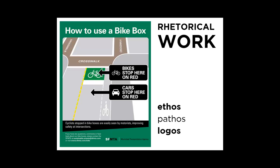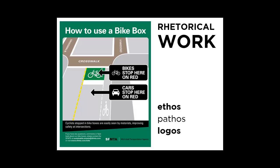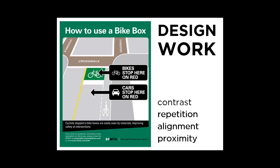As for the other rhetorical work, I'd argue this informational flyer draws on ethos. The statement 'cyclists stopped in bike boxes are easily seen by motorists improving safety at intersections' pulls at the ethical character of the reader — don't you, as a biker, want to make intersections safer? That's also a logical appeal. As for design, contrast is employed in a handful of ways: the bold white title on the green background and the two stacked arrow graphics in bold black and white are the best examples. The attention-grabbing arrow graphic appears twice with flush left text alignment. The key message 'cyclists stop' appears below the key graphic, and the two arrow boxes appear in close proximity.